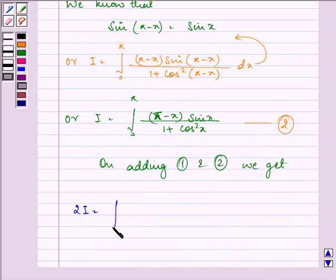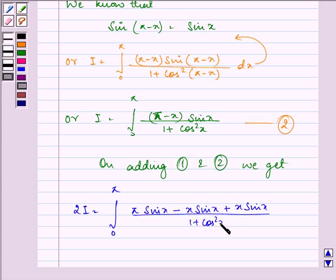2I equals integral from 0 to π of (π sin x - x sin x + x sin x) over 1 plus cos²x.